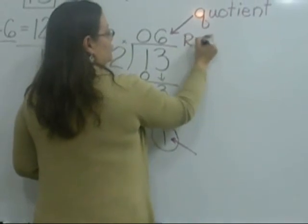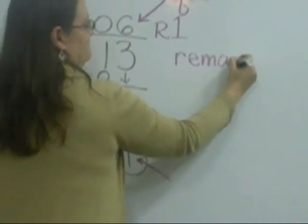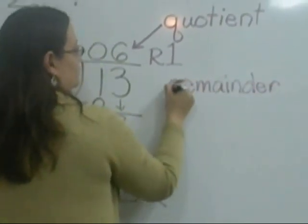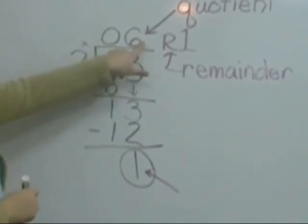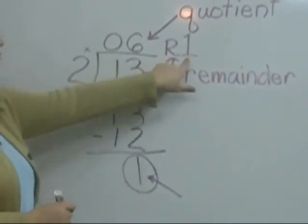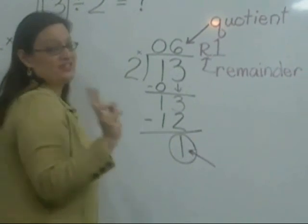The left over is called the remainder. And we write the answer that each friend got 6 cookies, remainder 1. So the division problem has two parts to their answer.